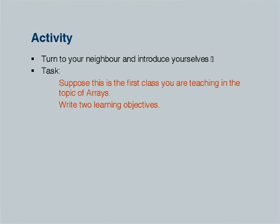This chart provides a prescription for how to write learning objectives. The center box says to formulate learning objectives using action verbs — identify, list, describe, etc. You start from the phrase 'the student will be able to do' or 'the student will be able to explain something.' Now, the activity: turn to your neighbor, introduce yourselves, and together write two learning objectives for the first class you will teach on the topic of arrays. We will give you a few minutes, then ask you to share your learning objectives.